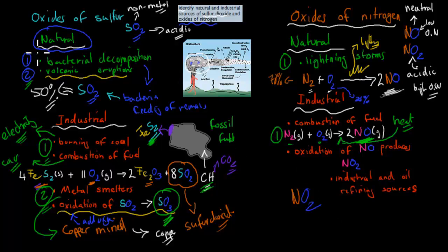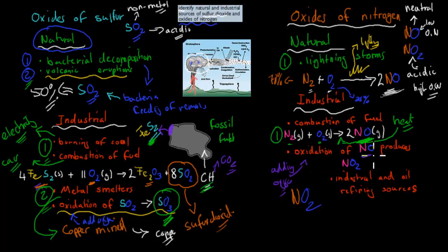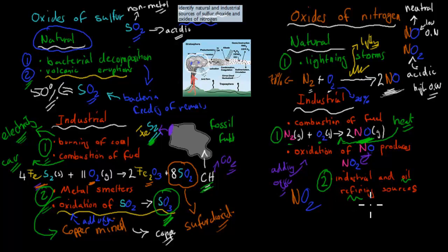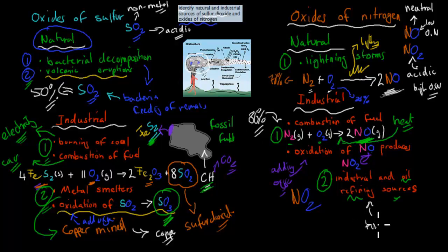We also need to know how NO2 can be produced, since the dot point asks about oxides of nitrogen — not just nitrogen monoxide but nitrogen dioxide as well. That comes from the oxidation of nitrogen monoxide: we add an oxygen molecule to NO to produce NO2, and this happens naturally in the air itself. If we have lots of nitrogen monoxide, nitrogen dioxide will automatically be produced. Another industrial source is oil refining, though by 86% of all nitrogen monoxide emitted comes from combustion of fuel — the vast majority — with only a small amount from oil refining processes.